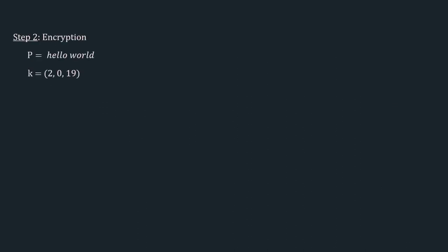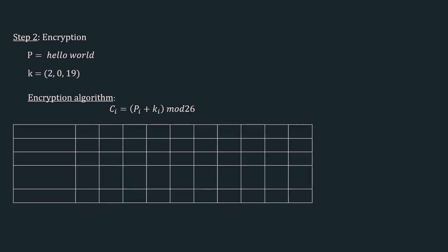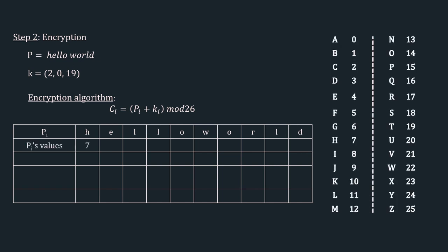Step 2 is encryption. We have the plain text 'hello world', the initial key stream 2, 0, 19, and the encryption algorithm Ci = Pi + Ki mod 26. We construct a table: the first row is Pi with the individual characters of the plain text. The next row is the numerical value of Pi using the mapping table. The key stream row ki starts with 2, 0, 19, and repeats: 2, 0, 19, again 2, 0, 19, and again 2.